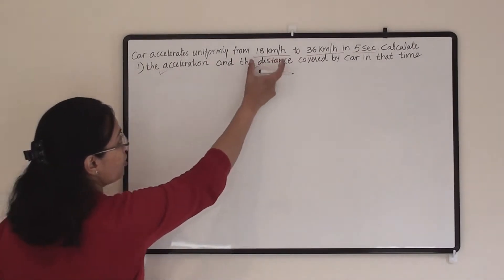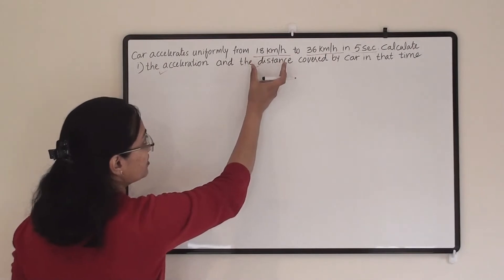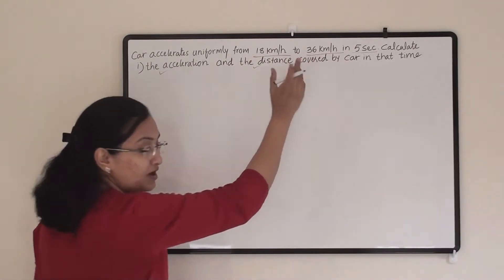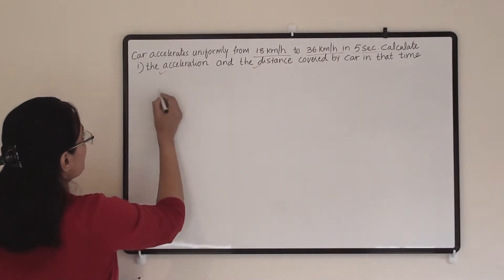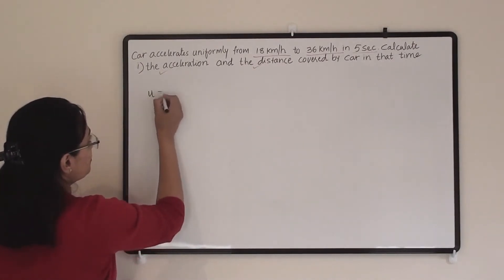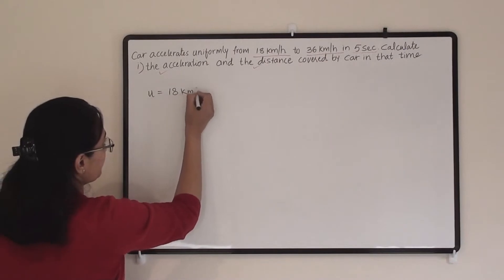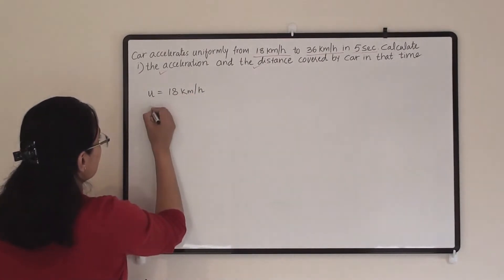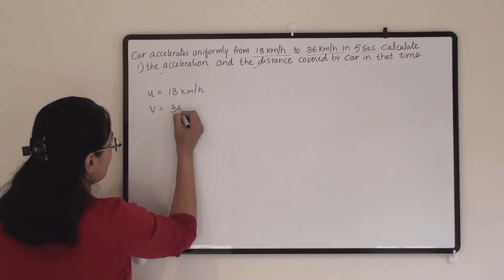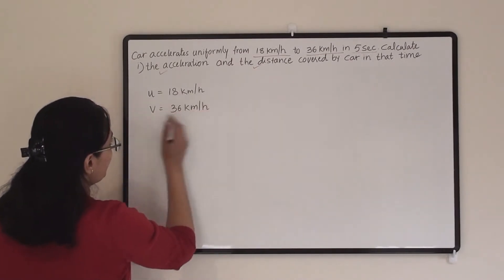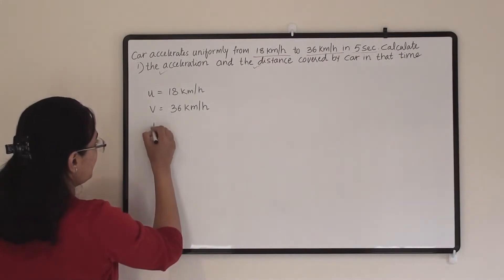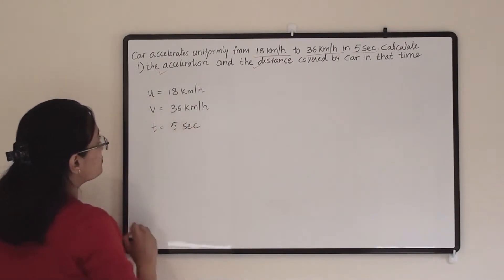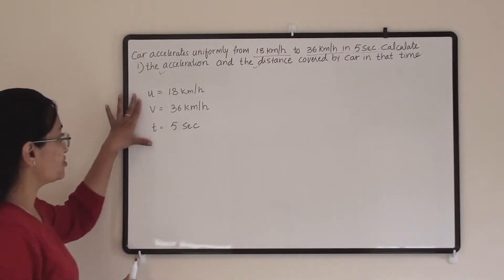The car accelerates uniformly from 18 to 36 km/h. So 18 km/h will become our initial velocity u, and 36 km/h will become our final velocity v. The time frame is 5 seconds. So these are all the pieces of information we have.